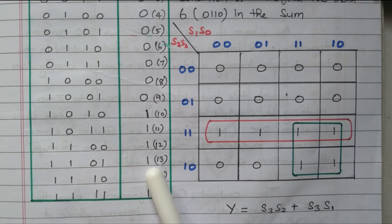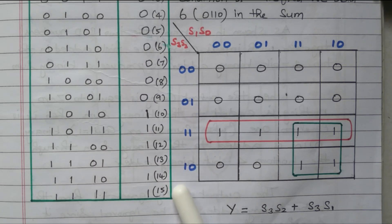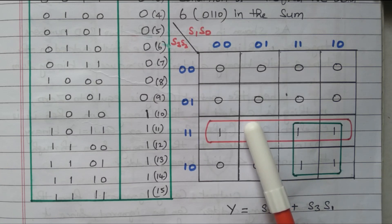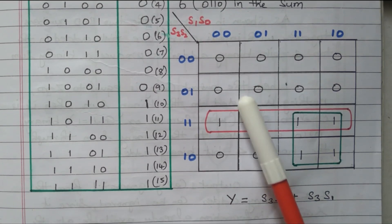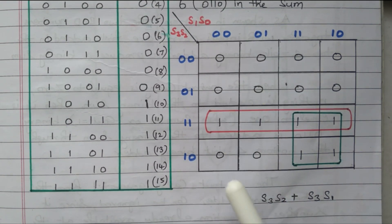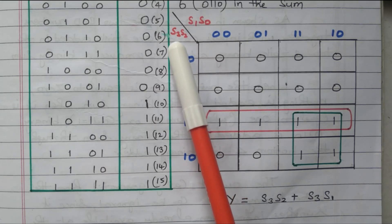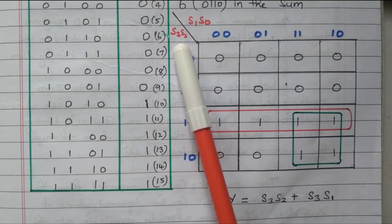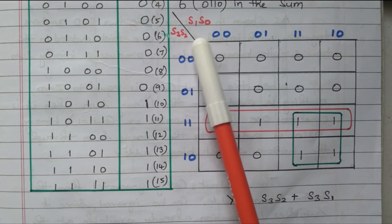So now, from this truth table, we need to develop the Boolean expression for the output Y in order to implement it with logic gates. For that, we can use the K-map — Karnaugh map technique can be used to find the expression for the output Y. The inputs are S3, S2, S1, S0, which are the outputs from the BCD adder, and we are checking whether these four digits represent a value greater than nine or less than nine.